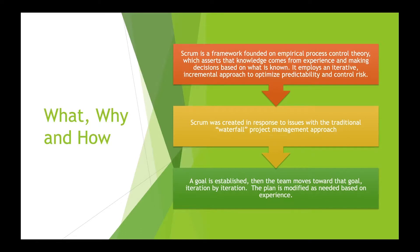Scrum is iterative and incremental, and the plan is modified as needed based on experience. The team plans work in short iterations with a clearly defined goal. As the team delivers potentially shippable value at the end of each increment, the plan is modified as needed based on experience.